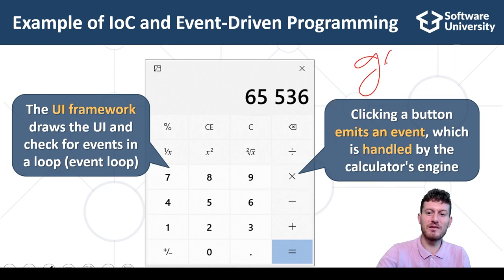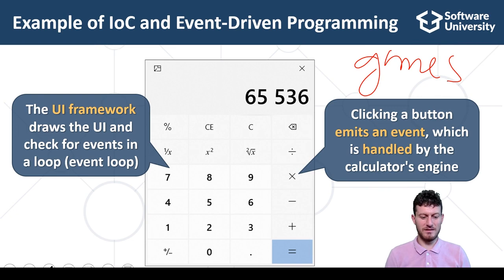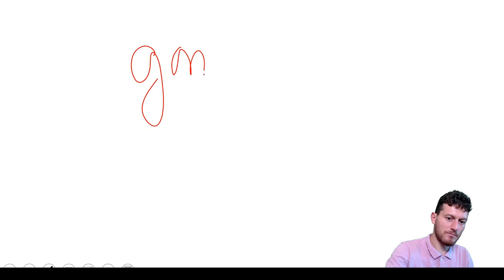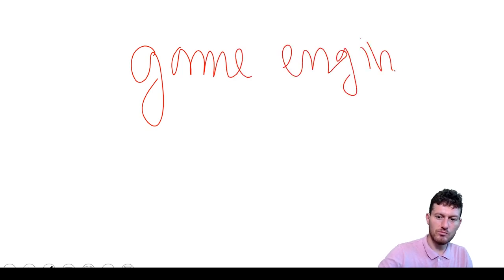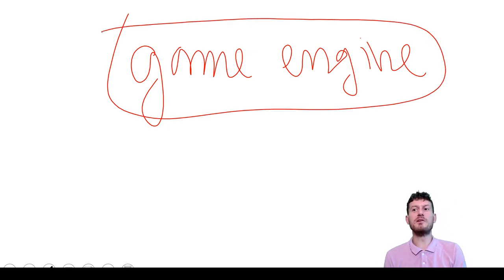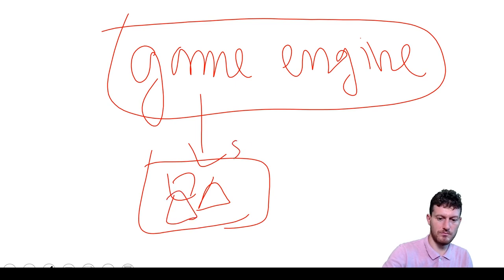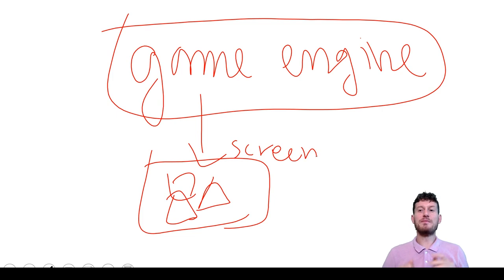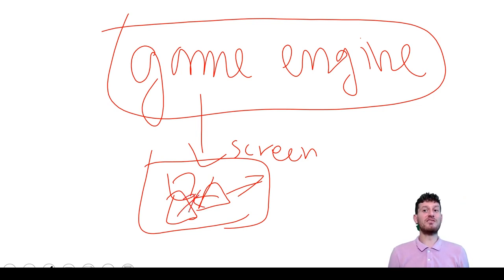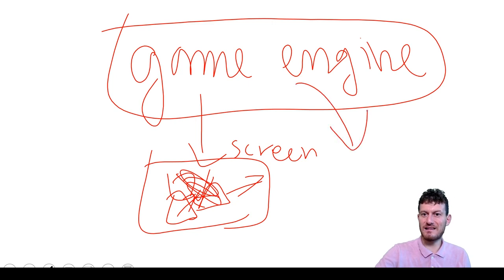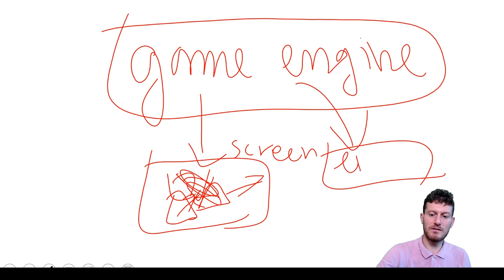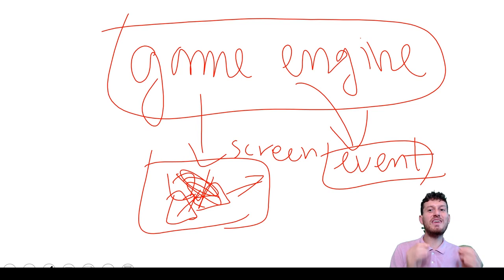Most computer games also work this way. The game engine — the framework for game development — draws the game objects on the screen and processes their movements and interactions. When something interesting happens in the game, such as when two objects collide, the game engine invokes an event handler to decide what to do. This is again inversion of control, program flow, and event-driven programming.